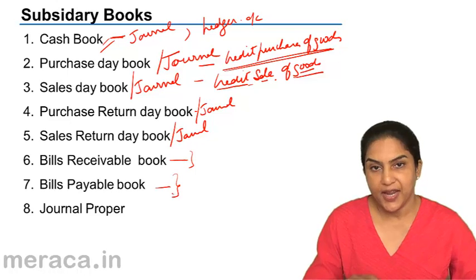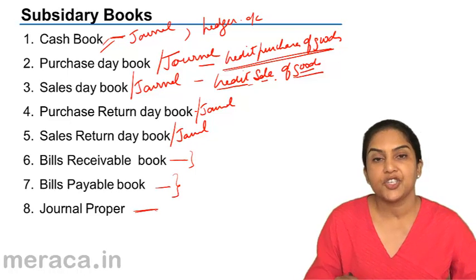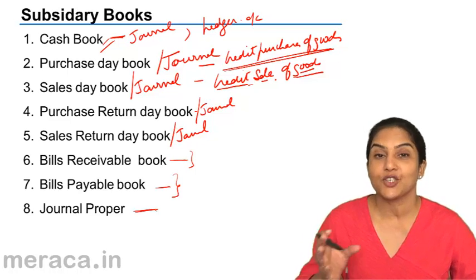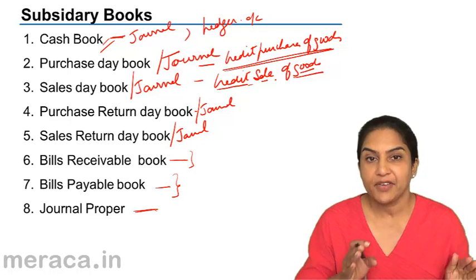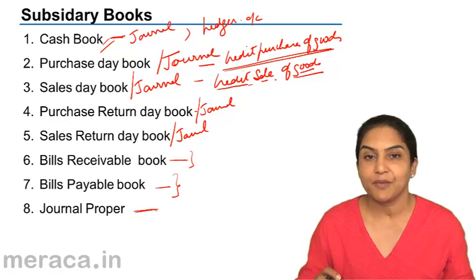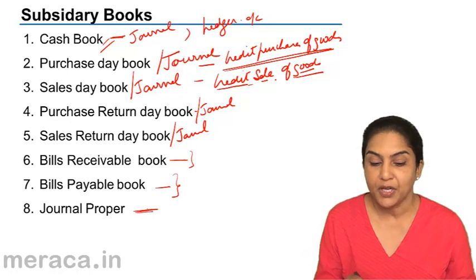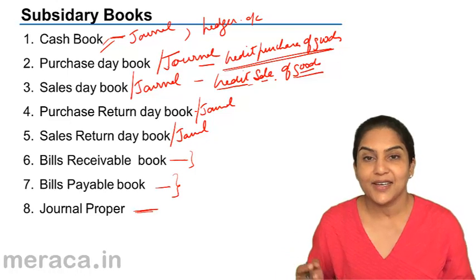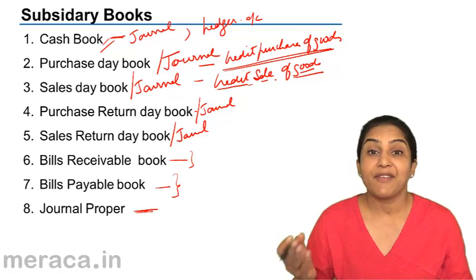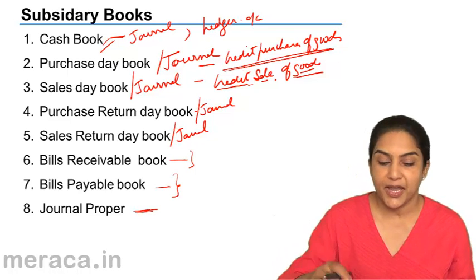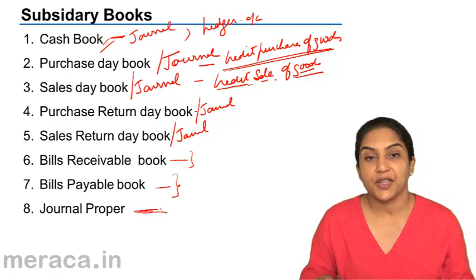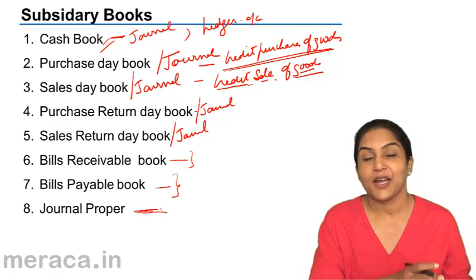Any other transaction is recorded in the journal proper. The journal proper has the format we discussed before — date, particulars, ledger folio, debit and credit. If there is a credit purchase of goods, we do not put it in the journal proper; we put it in the purchase day book. When there is a credit sale of goods, we put it in the sales day book. But if we have a credit sale of furniture, it cannot go in the cash book or the sales day book — it will be recorded in the journal proper.